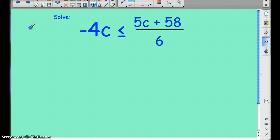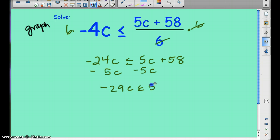We're going to solve and graph this one too. Pause the video and see if you can solve this on your own. Okay, so we're going to multiply by 6—we want to get rid of that denominator right away. So we're going to multiply those out. That would be negative 24c is less than or equal to 5c plus 58. I'm going to subtract 5c from both sides. That's going to be negative 29c is less than or equal to 58. I divide by negative 29 on both sides.